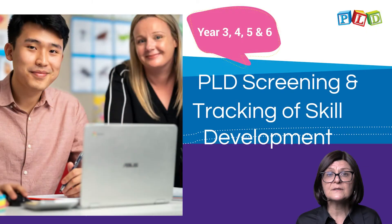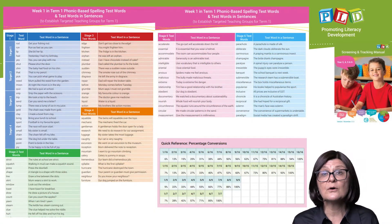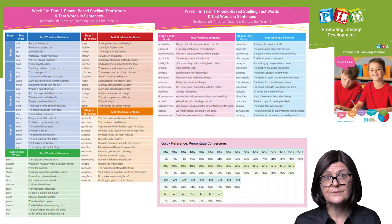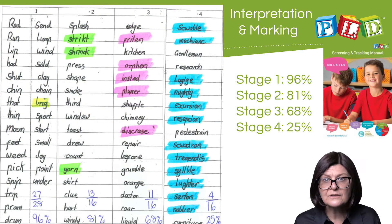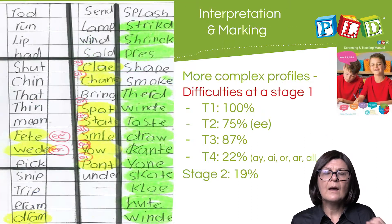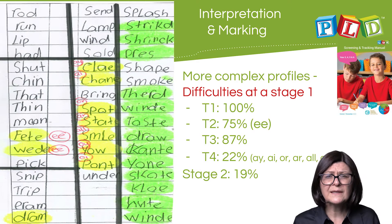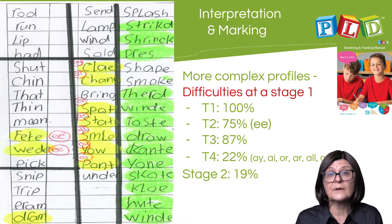There is a focus on screening and tracking within the course. It commences with a focus on a placement test and then progresses into how to interpret and mark a range of spelling test samples, including more complex students and students that are operating at a junior primary level, and how to interpret and mark these spelling samples as well.